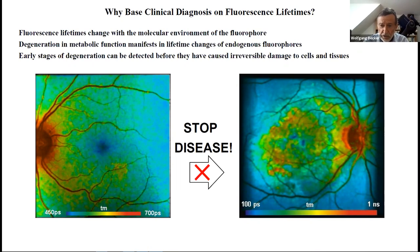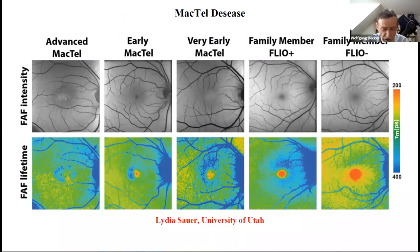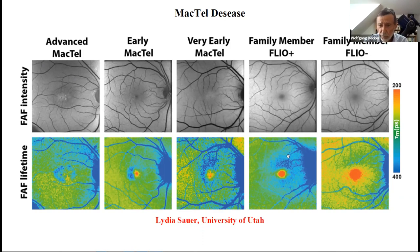There is a good chance this works. Here is a result from Lydia Sauer of the University of Utah. This is Mactel disease, and there are situations where Lydia found that you have patients where FLIO shows signs of Mactel disease, but the patient has no symptoms and there is no indication of the Mactel disease in the conventional images. So there is a chance that we find something out here and can start treatment before the patient really gets damaged or sick.